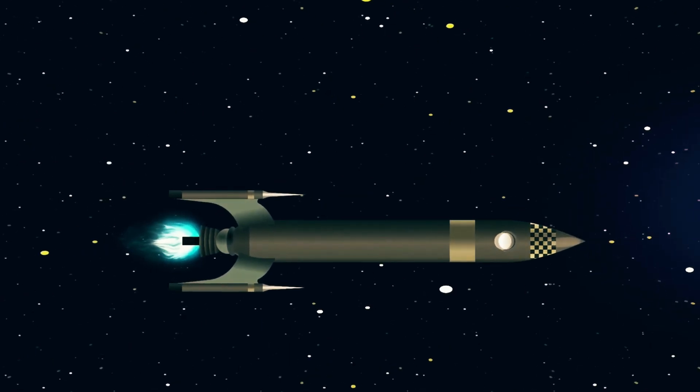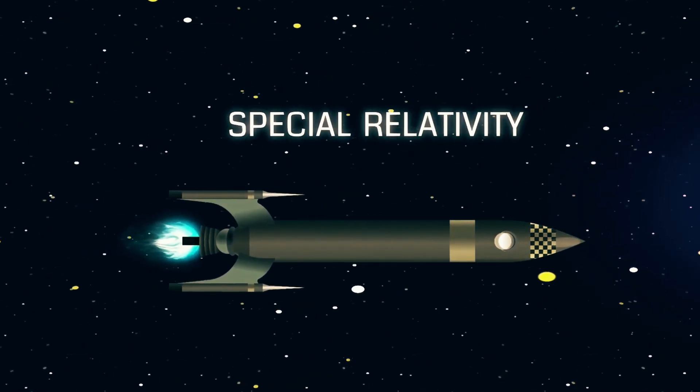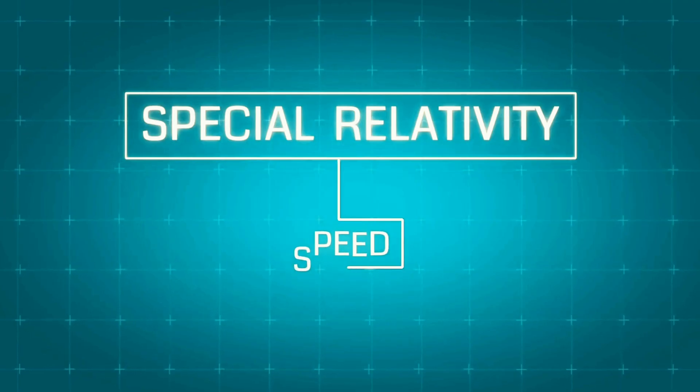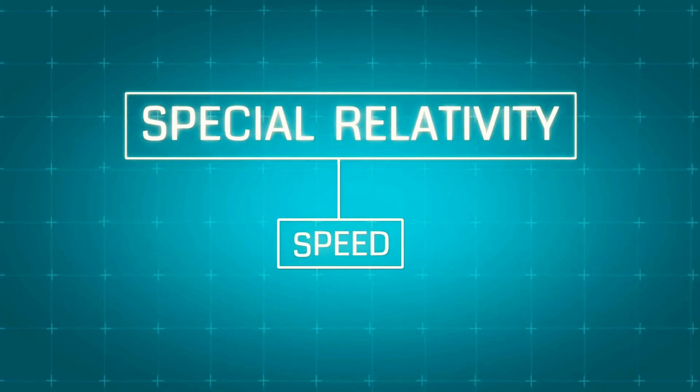But here's the question. Can we ever break the ultimate speed limit of the universe and travel faster than light? To answer this, we first need to understand Einstein's theory of special relativity. According to this groundbreaking theory, nothing can exceed the speed of light in a vacuum. But why?